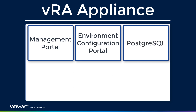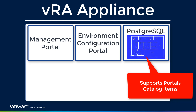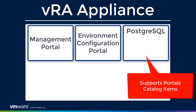The Postgres database doesn't just support those product portals — it also stores catalog items. These are blueprints. If we think about a house, a house has a blueprint that says this is how things should be built and this is where things should go. Just like with VRA, when we build a virtual machine, this tells us how we're going to build that virtual machine.